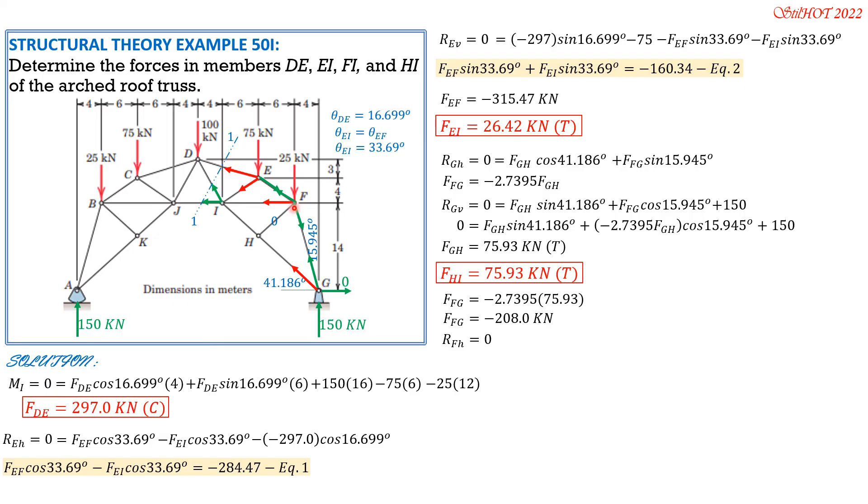To solve for FFI, set horizontal component at F zero. Let's begin with FFG because it is rightward, but it is negative, so equals negative 208 sine of 15.945, the horizontal component of FFG. Negative 208 sine of 15.945 minus FFI to the left, then minus FEF, so minus negative 315.47 cosine of 33.69, the angle that EF makes with horizontal. We can now solve FFI, so FFI is equal to 205.3 kilonewtons. It is positive, so it is tension. That's it.